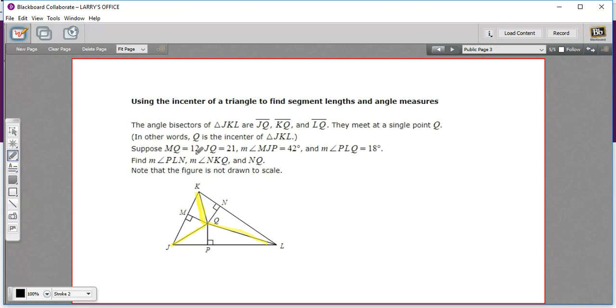So MQ is 12. This right here is 12. That's one of these in-radii. So you know that this is going to be 12, and this is going to be 12.